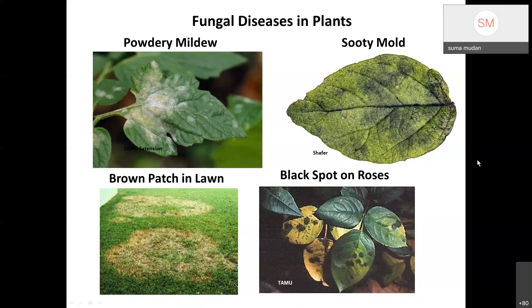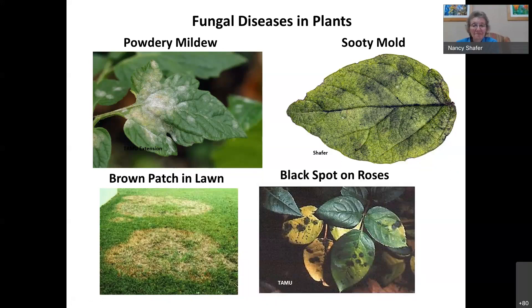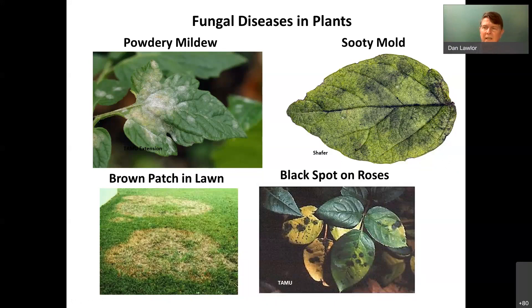Nematodes in garden soil are tough to treat because they're in the soil and there are also beneficial nematodes. Purchasing beneficial nematodes is costly and getting them adequately distributed in the soil is challenging. A Fort Bend master gardener has successfully dealt with this problem — contact the hotline to get connected with that resource. For basil with black spots and plant death, start fresh with a disease-resistant variety and water in the morning so leaves dry during the day — wet leaves overnight create ideal conditions for disease.